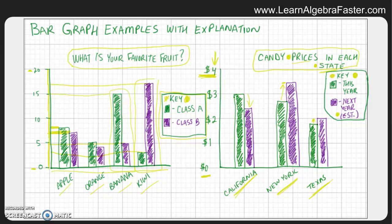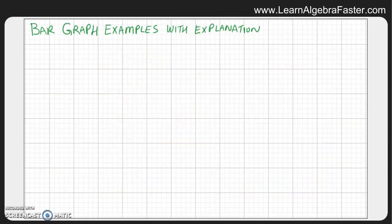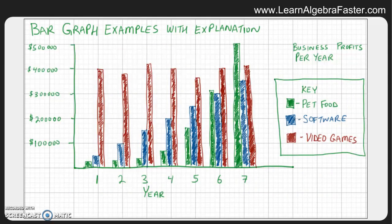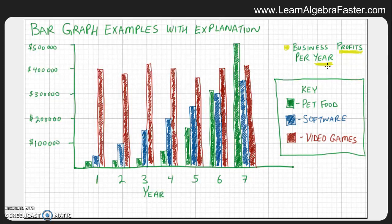Let's go to our final example — a big chart with lots of data. Despite being a more complicated chart, we'll still go through the same process. The title says "Business Profits Per Year," so we're looking at businesses and measuring their profits. This will be in dollars, and the groups are going to be per year.